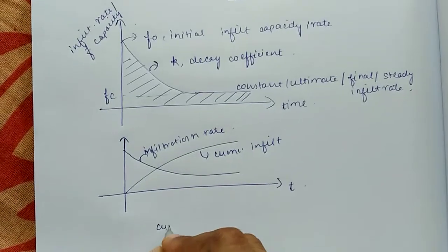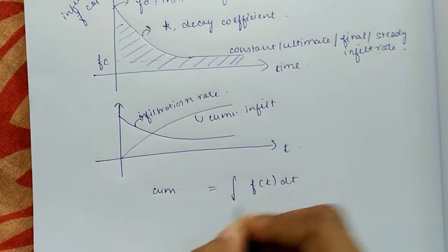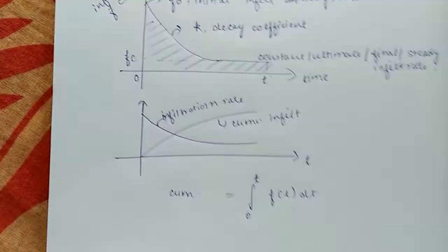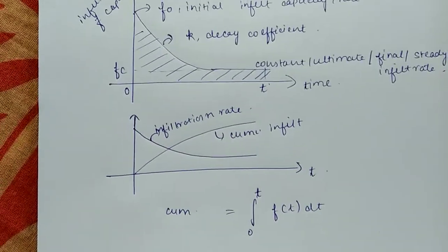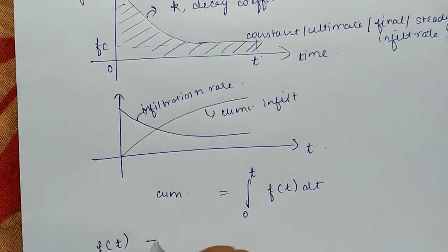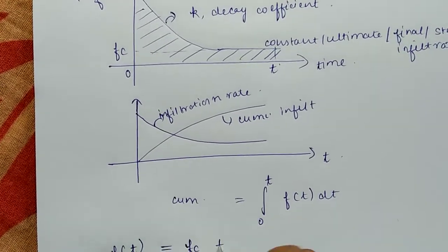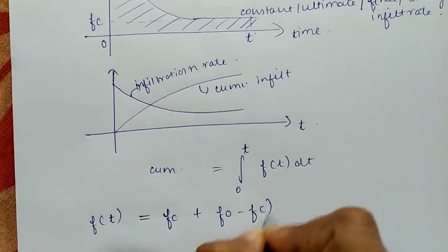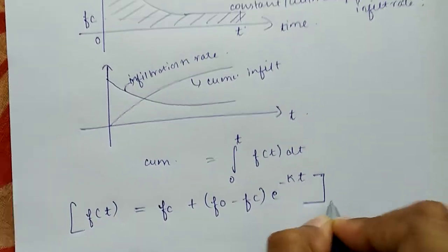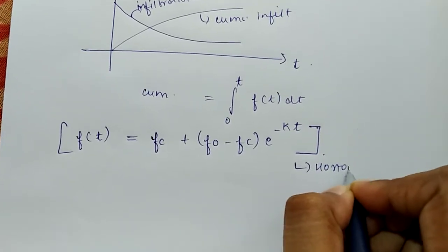Cumulative infiltration is infiltration rate integrated from 0 to t intervals. Horton has given the expression of infiltration rate at any point of time t. It is fc plus (f0 minus fc) e to the power minus kt. This is the equation by Horton, also called Horton's infiltration equation.